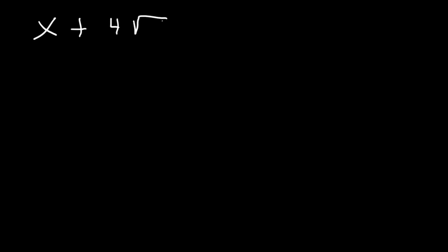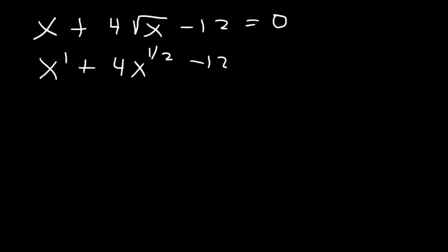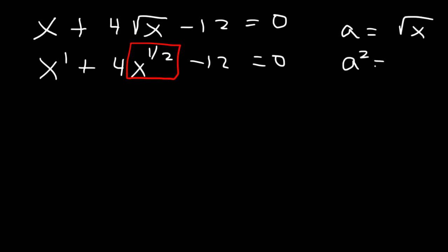Here's another example: x plus 4 times the square root of x minus 12. The square root of x is basically x to the 1 half. So we're going to set a equal to the middle variable, which is x to the 1 half, or square root of x. So if a equals the square root of x, that means a squared is x.